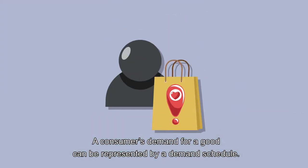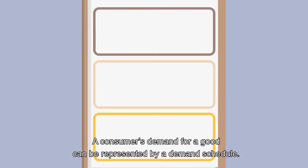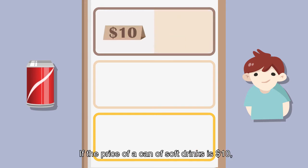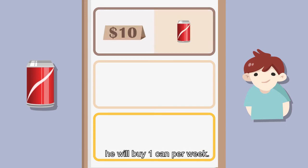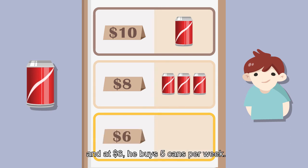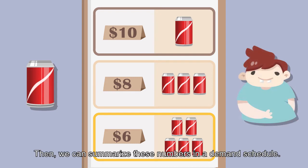A consumer's demand for a good can be represented by a demand schedule. For example, Ming likes soft drinks. If the price of a can of soft drink is $10, he will buy one can per week. At $8, he buys three cans per week. And at $6, he buys five cans per week. We can summarize these numbers in a demand schedule.